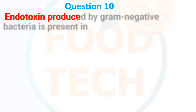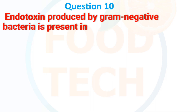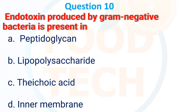Endotoxin produced by gram-negative bacteria is present in: A. Peptidoglycan, B. Lipopolysaccharide, C. Teichoic acid, D. Inner membrane. The answer is B: Lipopolysaccharide.